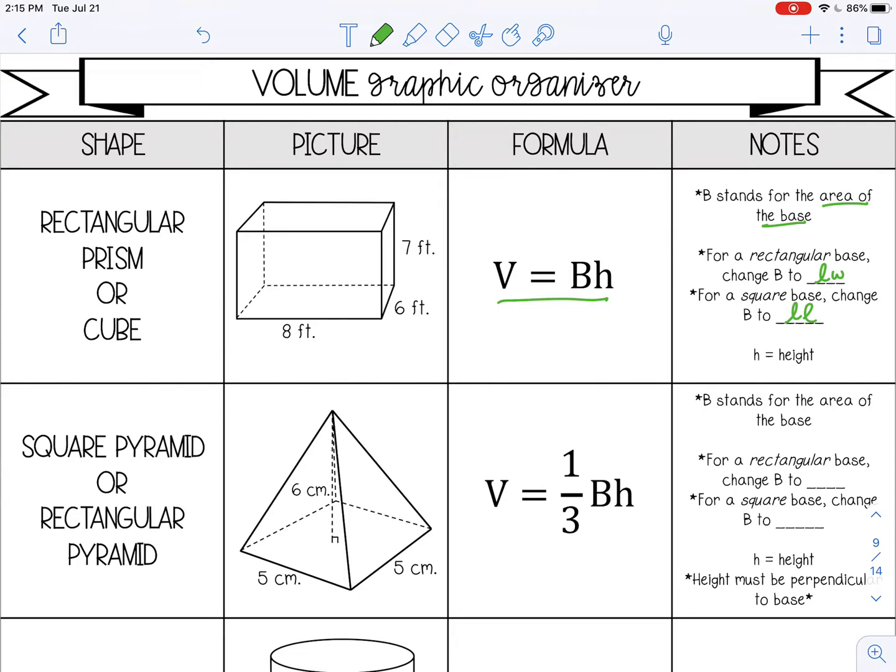So let's find the volume of this shape. So we have a rectangular base, so I'm going to change the B to length times width times height. So 8 times 7 times 6. And remember, the order really doesn't matter because the length, width, and height really depend on the way the shape is facing. And you get 336 feet cubed.